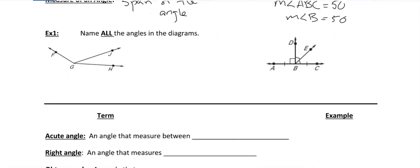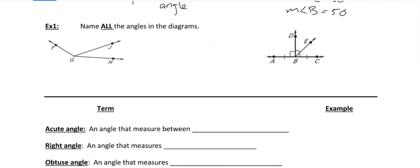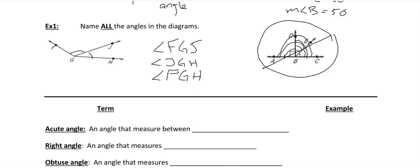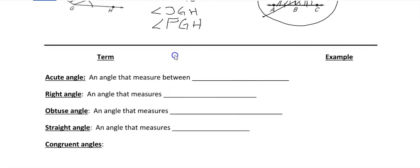Let's look at an example: name all the angles. If I wanted to talk about this angle at G, I could not call it just angle G because there are too many angle G's. So here would be one angle: angle FGJ. Here's another: angle JGH. And the last one is angle FGH. Those are the three angles. We're going to skip the next one because there are so many possible angles — six total if you count the straight angles — so I think you get the point.